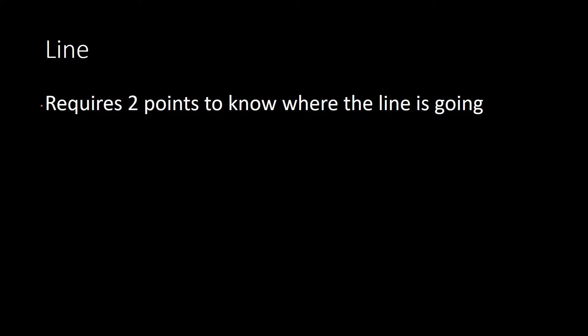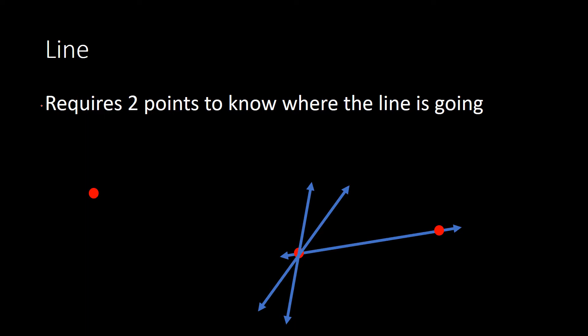For a line, we need to know two points in order to know where the line is going. Here's a point — if we were to draw a line through this point, the line could go really anywhere. But to know which direction it's going specifically, we need a second point. So if we have a second point, then we know exactly where the line is going — it's going to go right through those two points. Also, if we have two points, there's only one line that can go through those two points. So for any two points, there's only one line that can go through them.